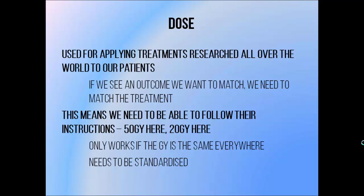Research of treatment effectiveness is carried out all around the world. If we see that one group of patients does really well with a particular treatment, we might want the same result for our own patients. If we want the same results that we see in a published trial, we need to deliver the same treatment. This would be really difficult without a standard unit of dose. Without the grey, our unit of radiation dose, we couldn't say give 50 grey to this target, less than 20 grey to this organ. We just wouldn't have the language to describe it accurately.